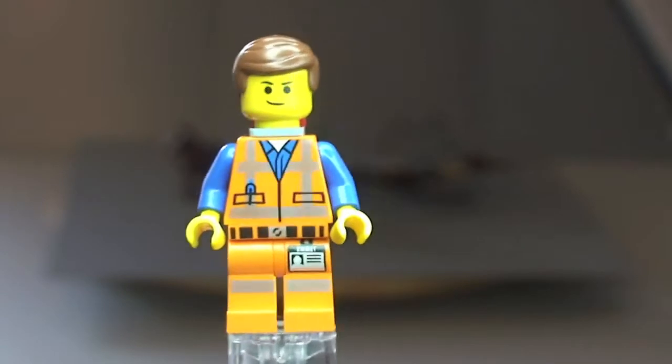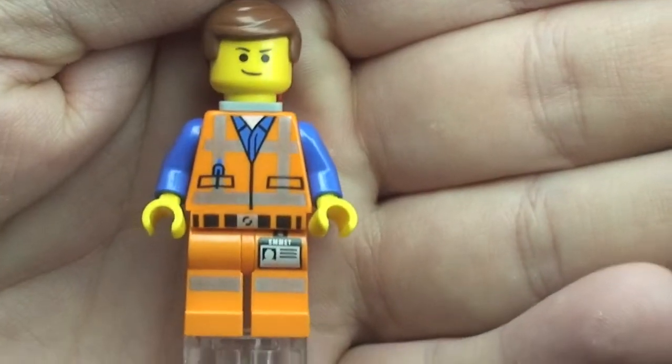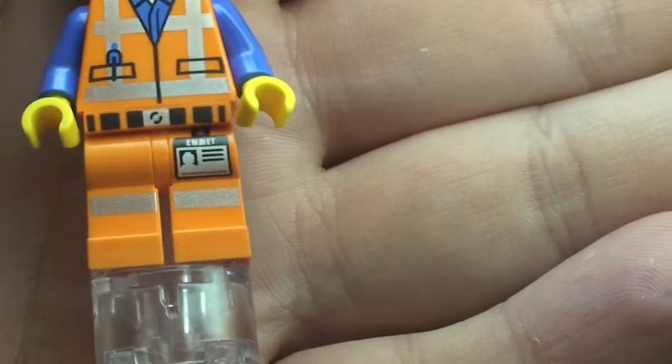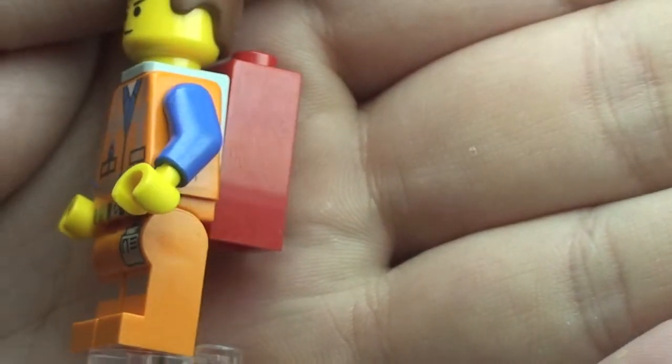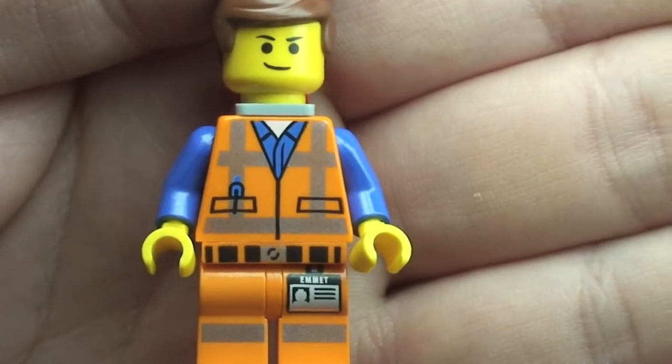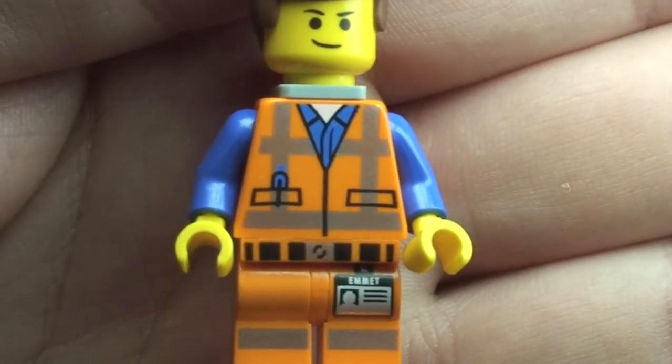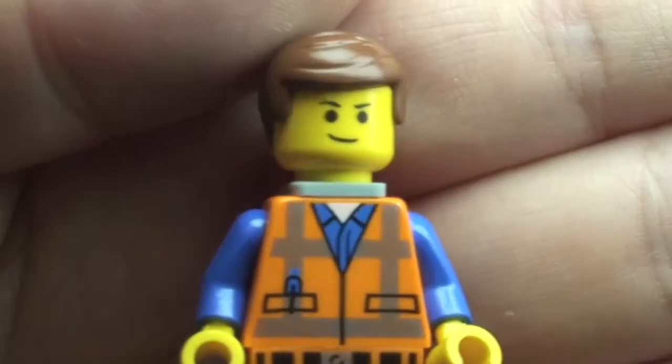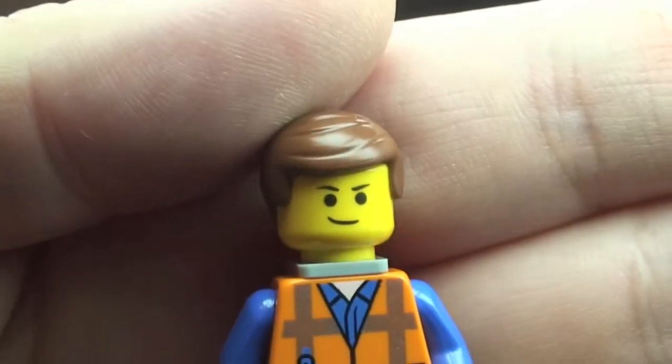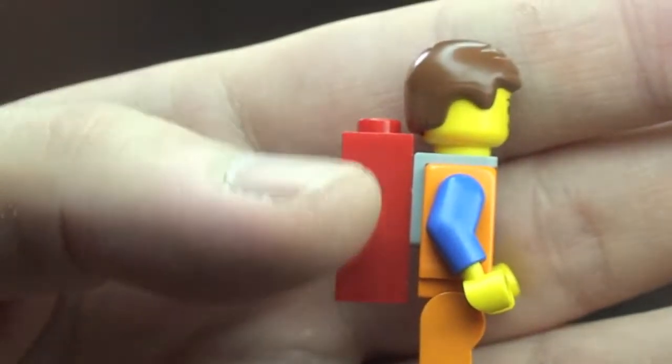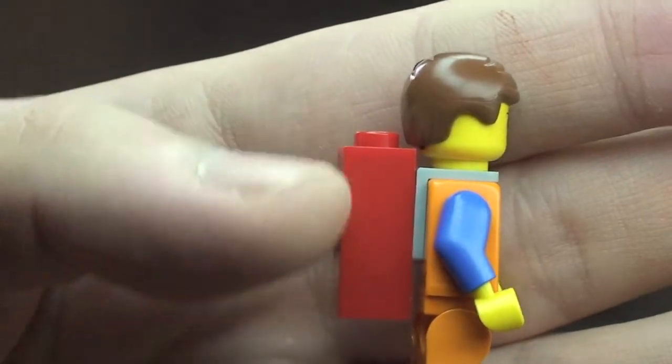First up we have Emmett. You can see his printing on his legs and the printing on there, obviously his Emmett pass. See the front of his torso and that front torso printing, his blue arms, his printed face and his hairpiece. The red piece there on his back is obviously the precious piece of resistance.